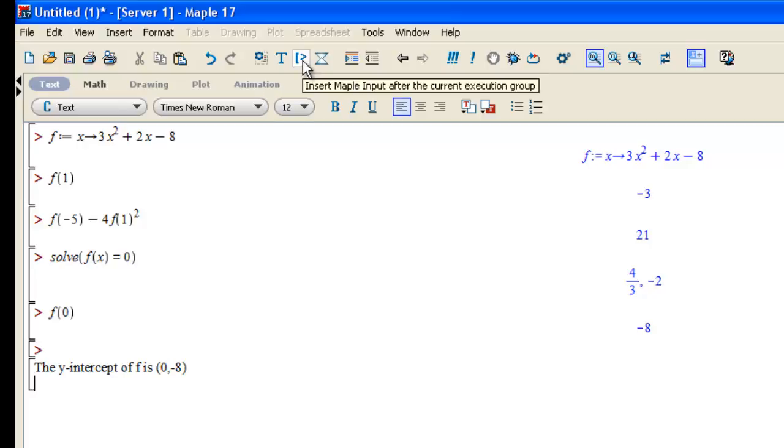So if I want to start now entering commands again, I switch back to command prompt mode by clicking this bracket greater than symbol in the menu at the top. And that puts me back in execution mode.